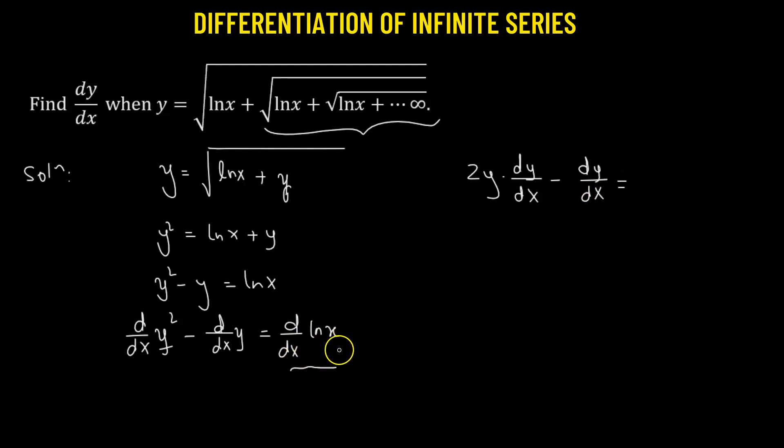Now on the right-hand side, we have derivative of the natural log function, and that value is simply 1 over x. So this will be now 2y minus 1 multiplied to derivative of y with respect to x equals to 1 over x.